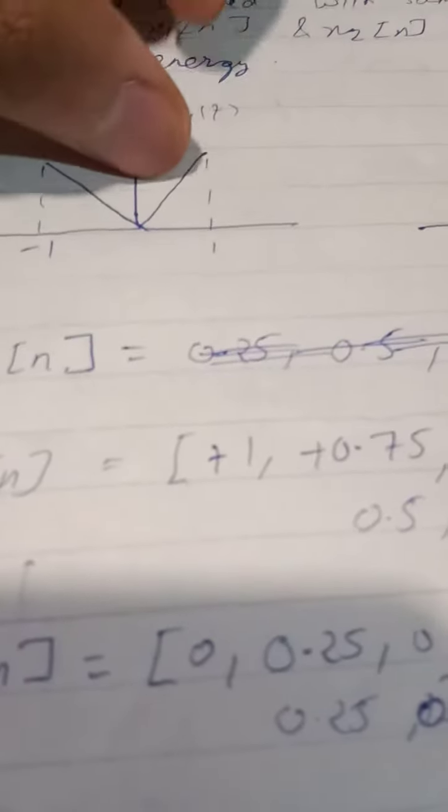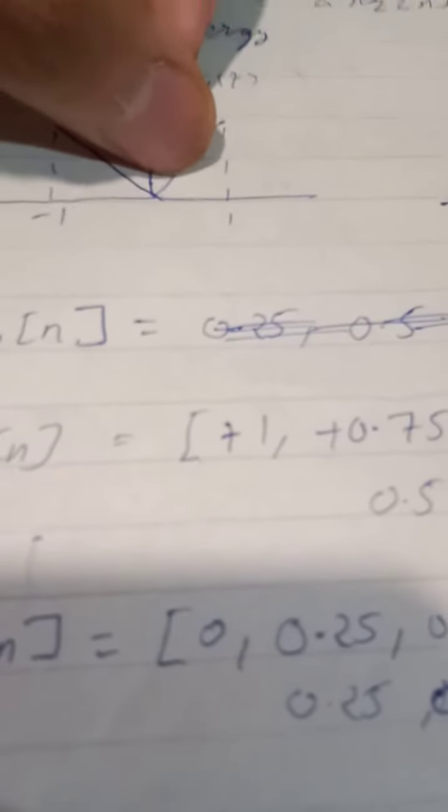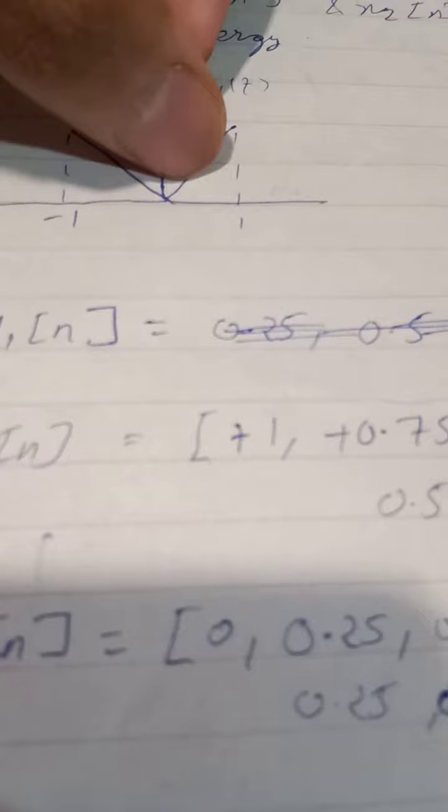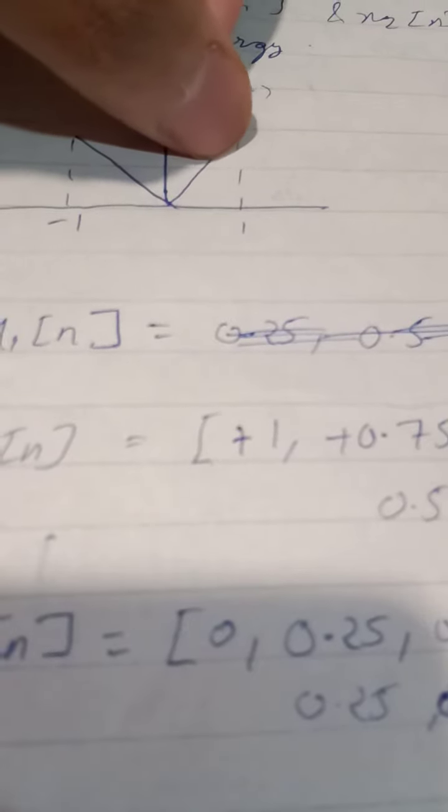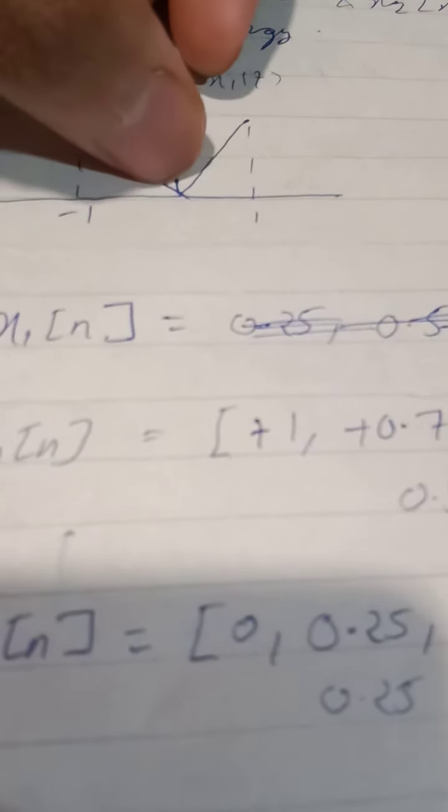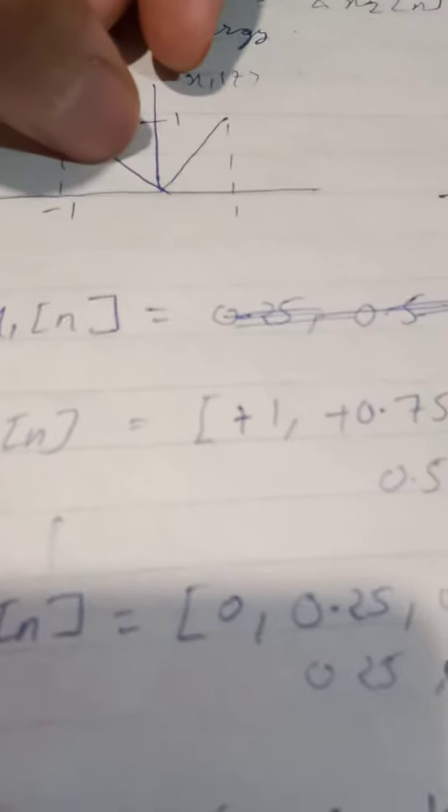Now we sample it by 0.25 second so we have to take sample every 0.25 second. So first sample will be 1 by 4 then 1 by 2 then 3 by 4 then 1 and the same thing will be here also.